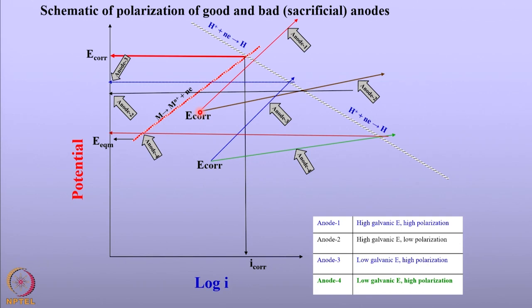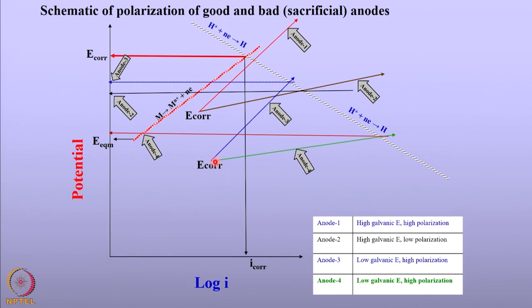The characteristics of the anodic dissolution of these anodes are shown here. Anode 1, when the potential is raised, polarizes steeply — its Tafel slope is higher. Anode 2, with an increase in potential, polarizes at a much lower rate, meaning it delivers more current compared to anode 1. We also have another anode of lower corrosion potential, which can exhibit either higher polarization (anode 3) or lower polarization (anode 4). Depending on how the anode polarizes, the net potential changes.